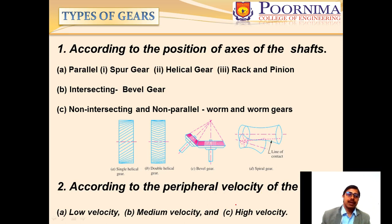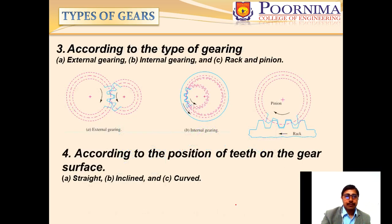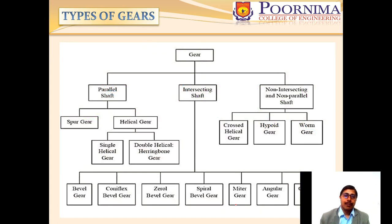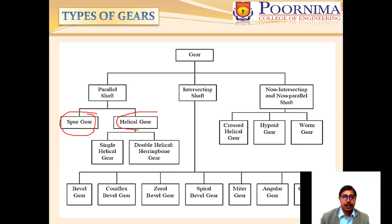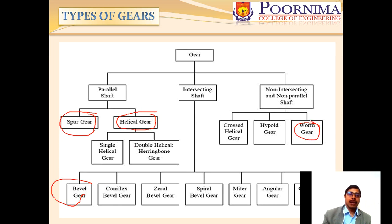The second classification is according to the peripheral velocity of the gears: low velocity, medium velocity, and high velocity. The third is according to the type of gears: external gears, internal gears, and rack and pinion. The fourth is according to the position of the teeth on the gear surface: straight, inclined, and curved. A chart shows the important types — spur gear, helical gear, bevel gear, and worm and worm gear.